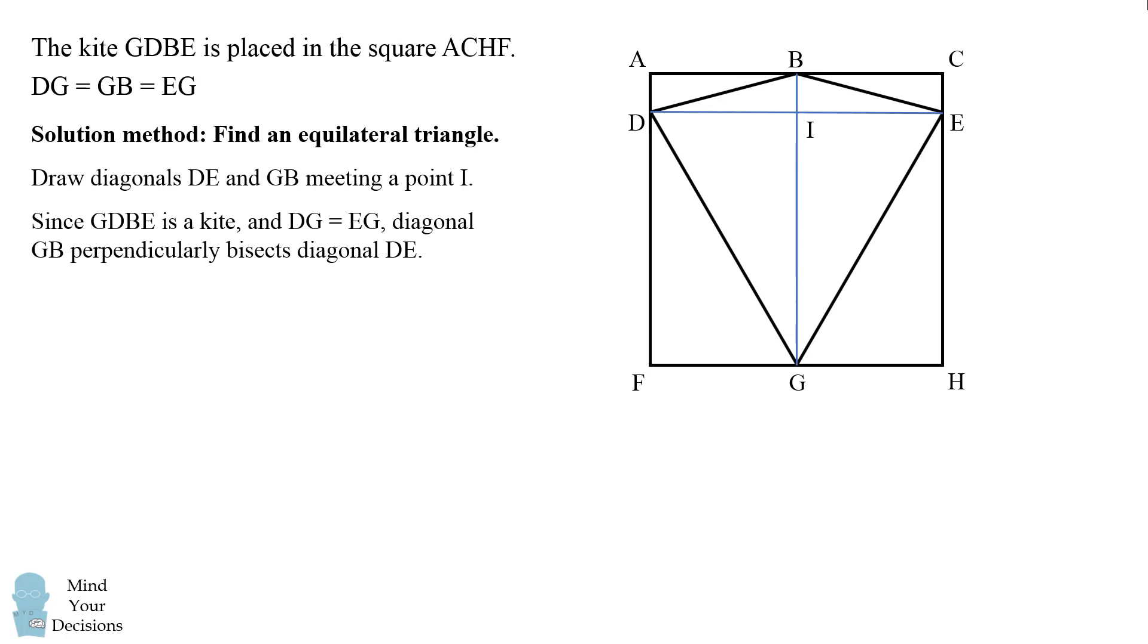Now instead of considering the 30, 60, 90 right triangles, we'll consider the larger triangle, which is DEG. So we have these lengths, which we've already deduced from the previous solution method. And just to restate, we know that DE is equal to the length of the square, which is equal to DG.